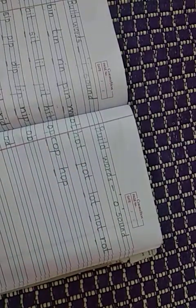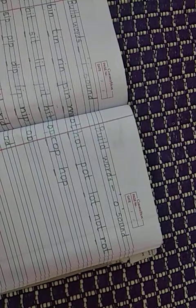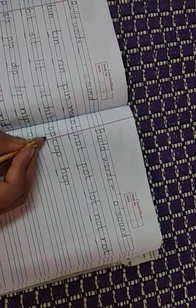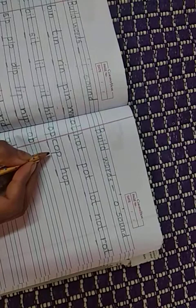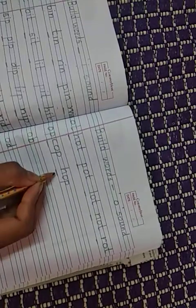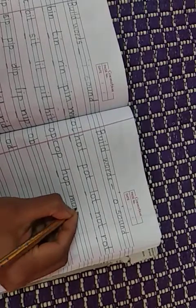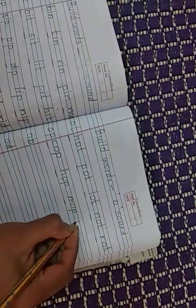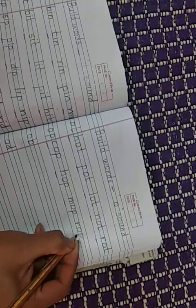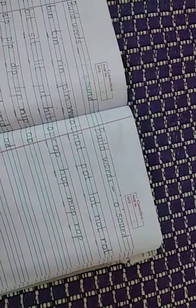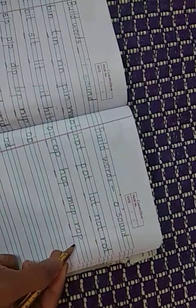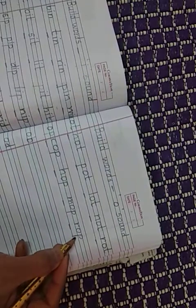Build words of O sound. Build words of O sound. OP words: cop, hop. H, OP, hop. Then M, OP, mop. R, OP, rop. Which is this rope? Rope you know: R, O, P, E. Rope: R, O, P, E. It is E.